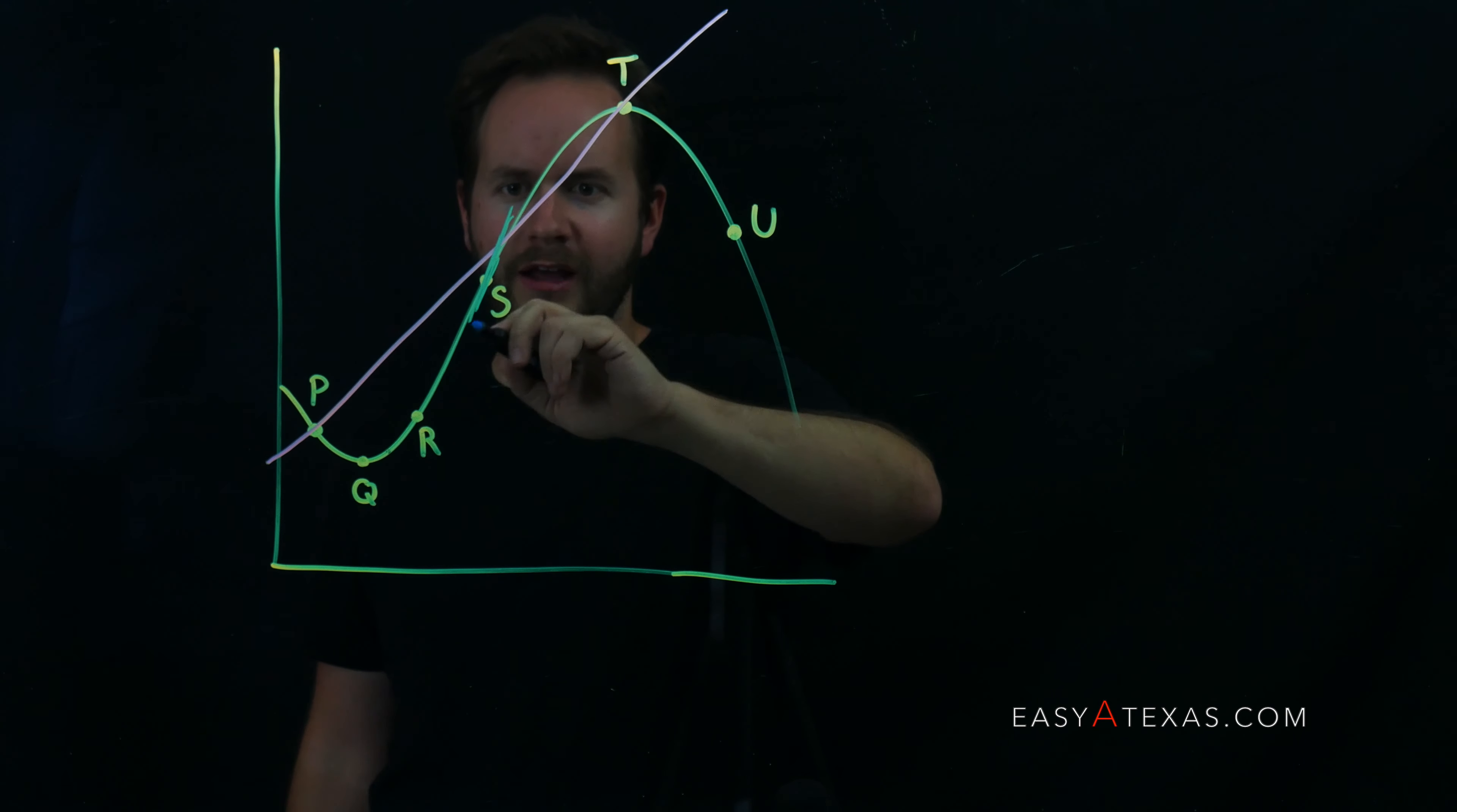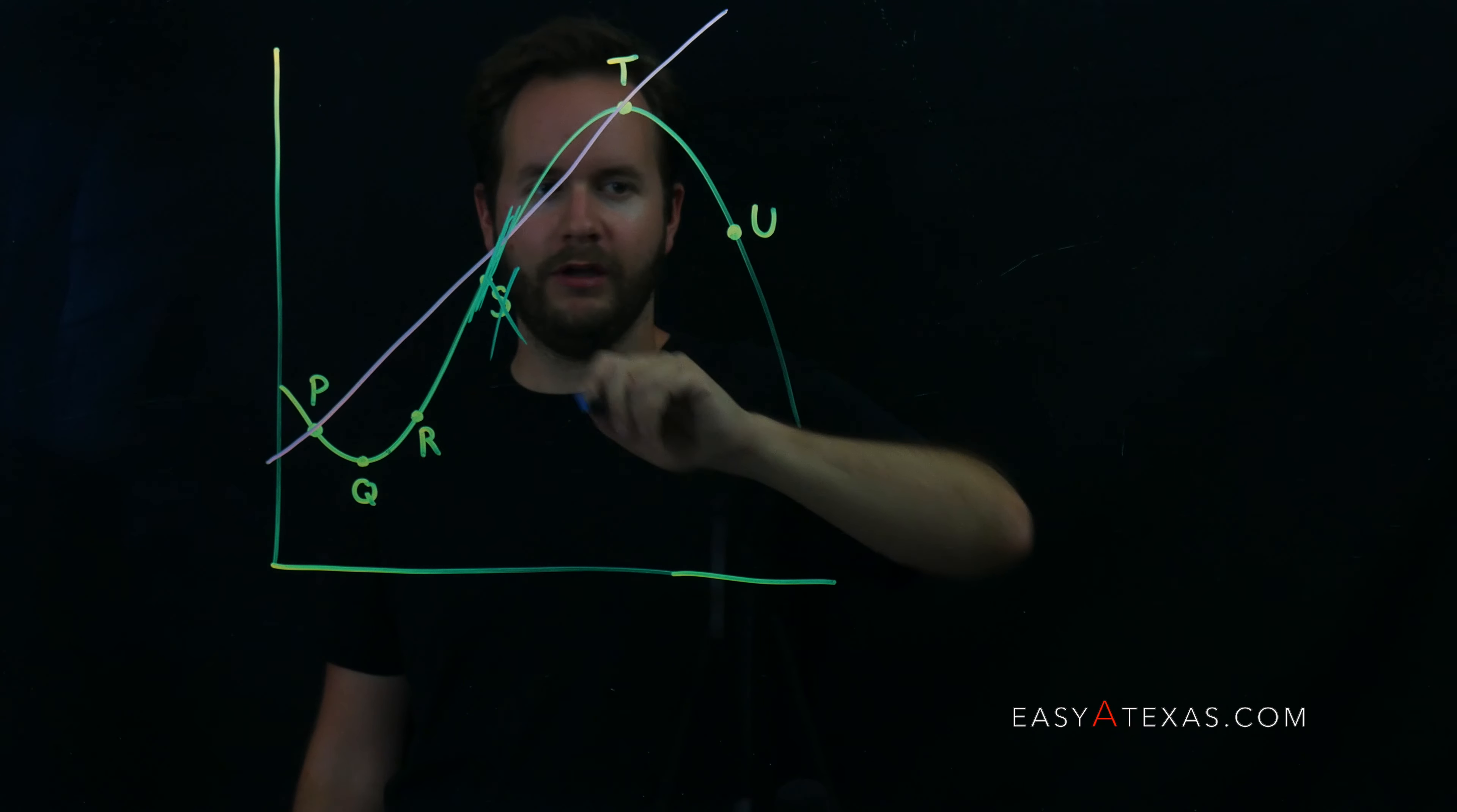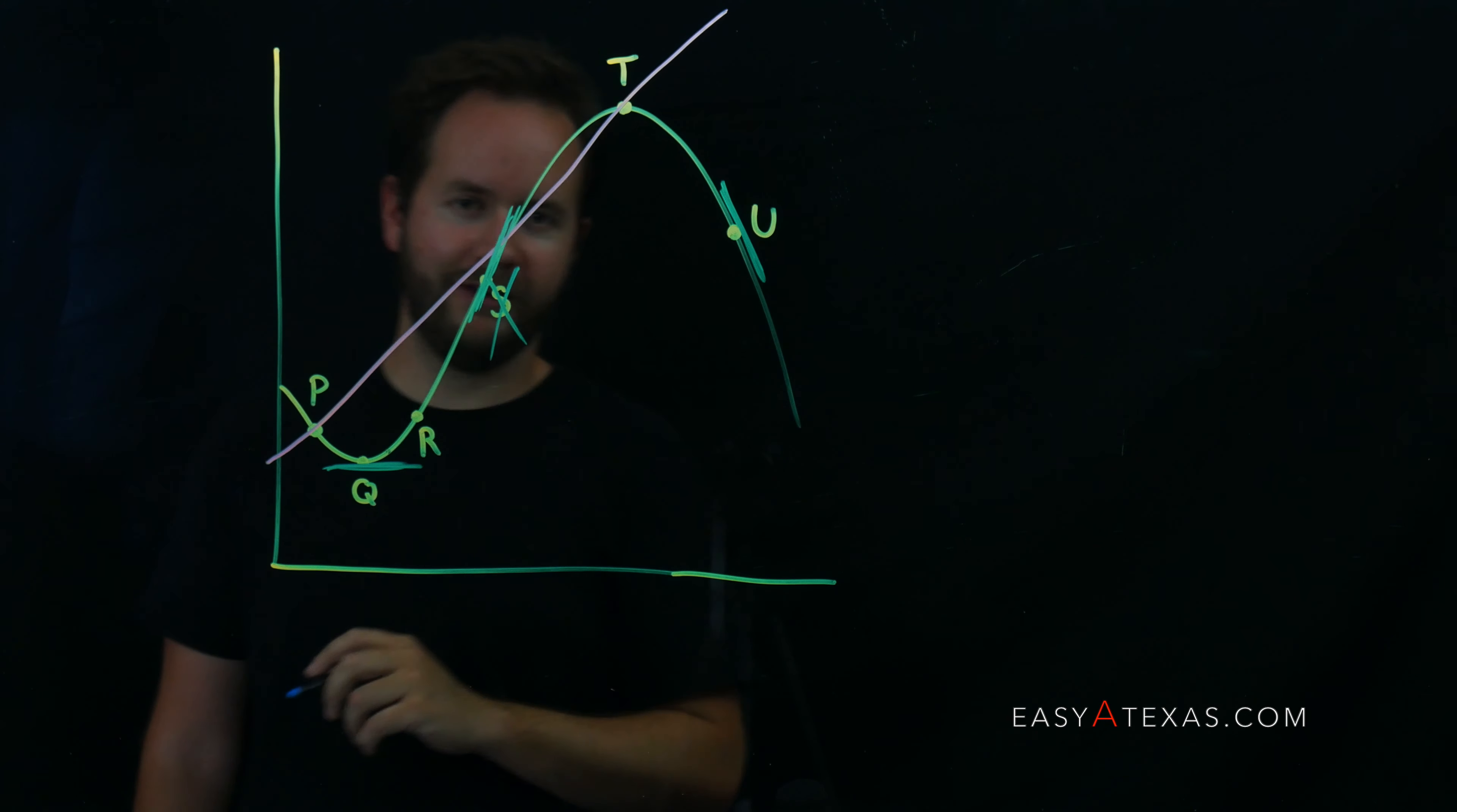As we can see, the slope here doesn't quite match the slope of the pink line, so S is out. U is a downward slope, so that doesn't work. Q is a horizontal slope, so that doesn't work.